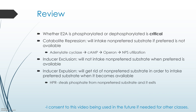To review: whether E2A is phosphorylated or dephosphorylated is critical to this process. Catabolite repression is when a bacteria will intake a non-preferred substrate if a preferred substrate is not available — adenylate cyclase converts ATP to cAMP, cAMP activates an operon, and that operon activates genes so non-preferred substrates can be used. Inducer exclusion is when bacterial cells will not intake non-preferred substrates when a preferred substrate is available.